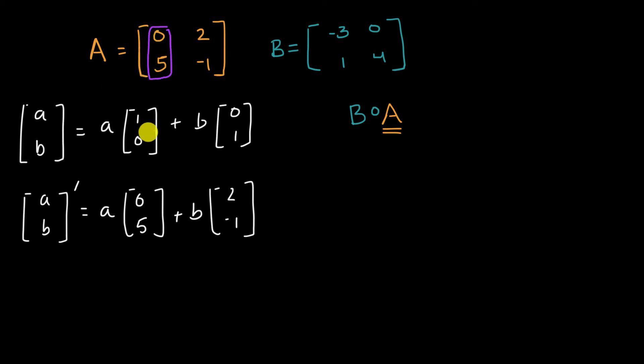we can transform each of these vectors that you have in matrix A. Because remember, that says what do you turn the vectors one zero and zero one into? So if we transform zero five using the matrix B, and if we transform two negative one using the matrix B, and we put them in their respective columns, we should have the composition of this. So let me write it this way and create a little bit of space. So let's say that the composition B of A is equal to, I'll write a big two by two matrix right over here.